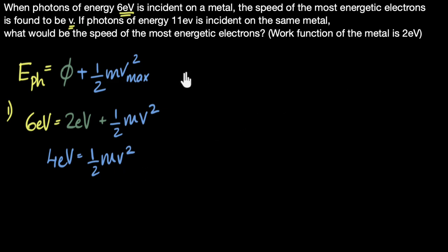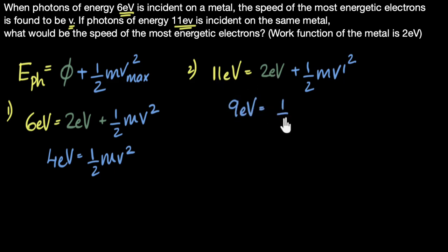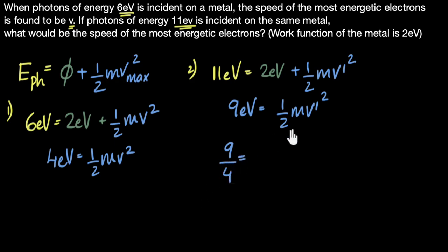In the second case, the energy of the photon is 11 electron volts. So: 11 electron volts equals the same work function of 2 electron volts, plus half M times V' squared. Solving: 11 minus 2 is 9, so 9 electron volts equals half M times V' squared. Dividing the two equations: 9 over 4 equals V' squared divided by V squared, since the half and M cancel.